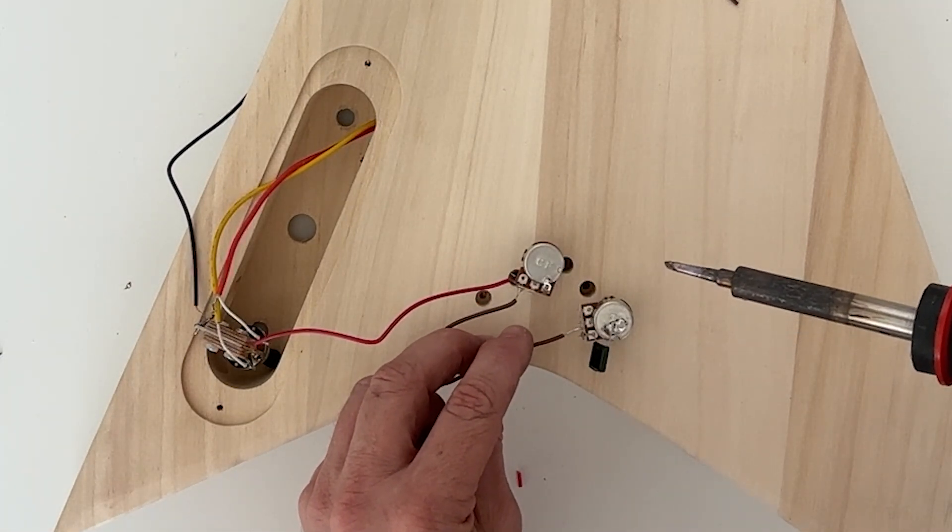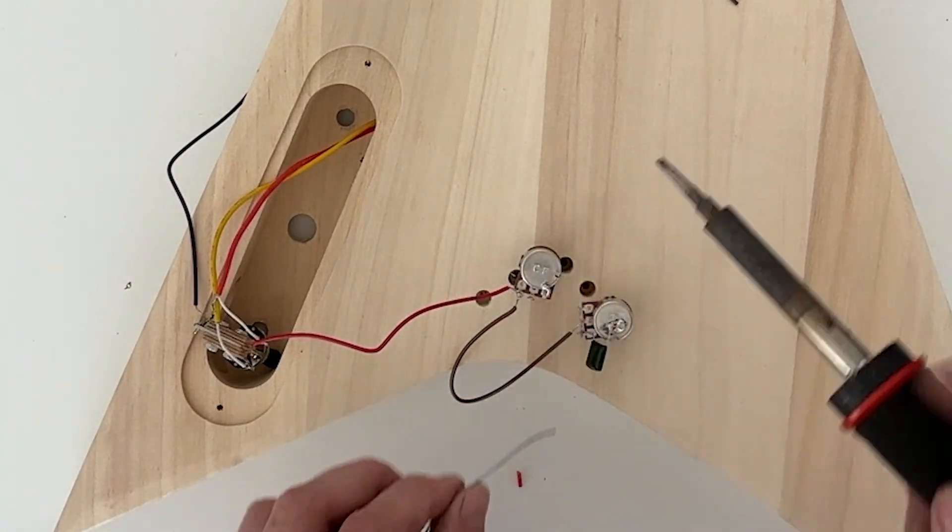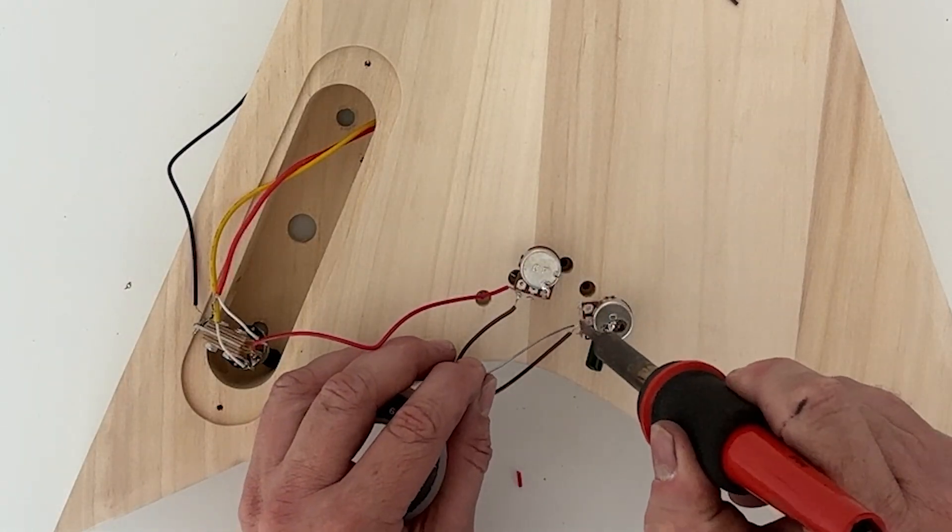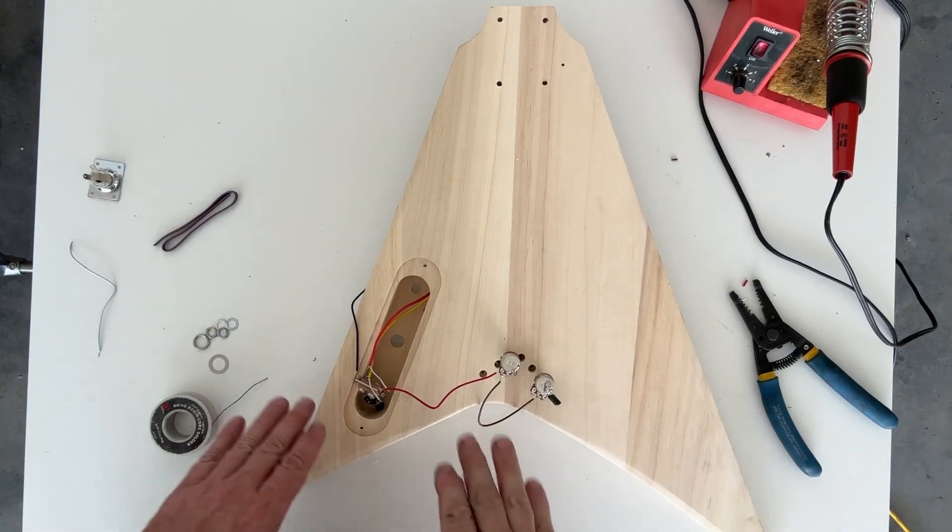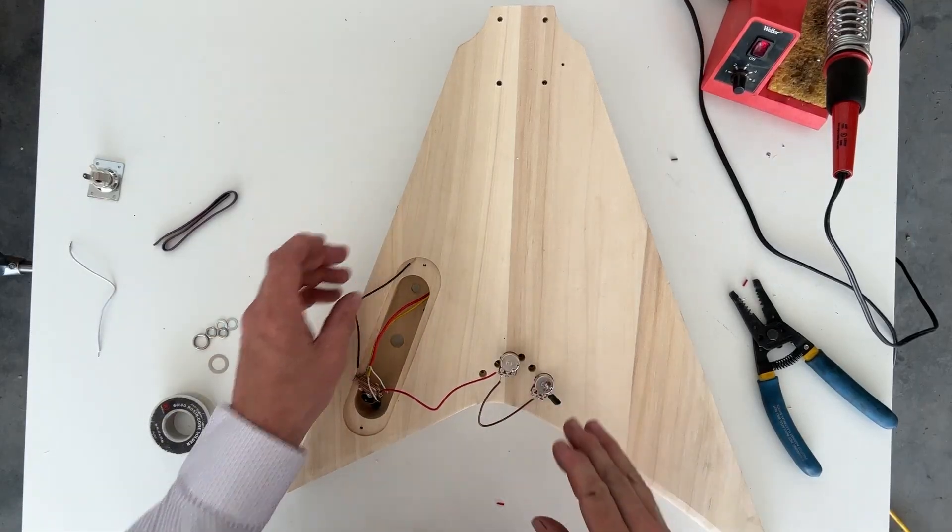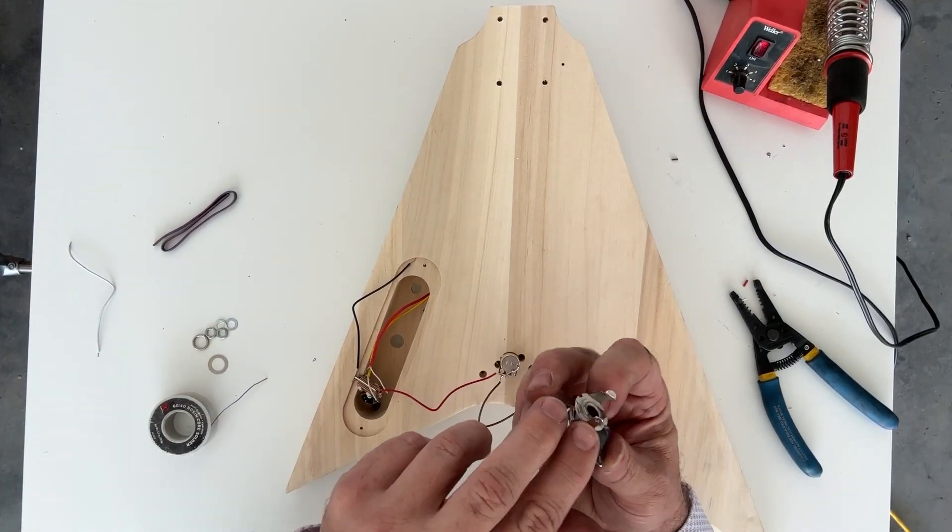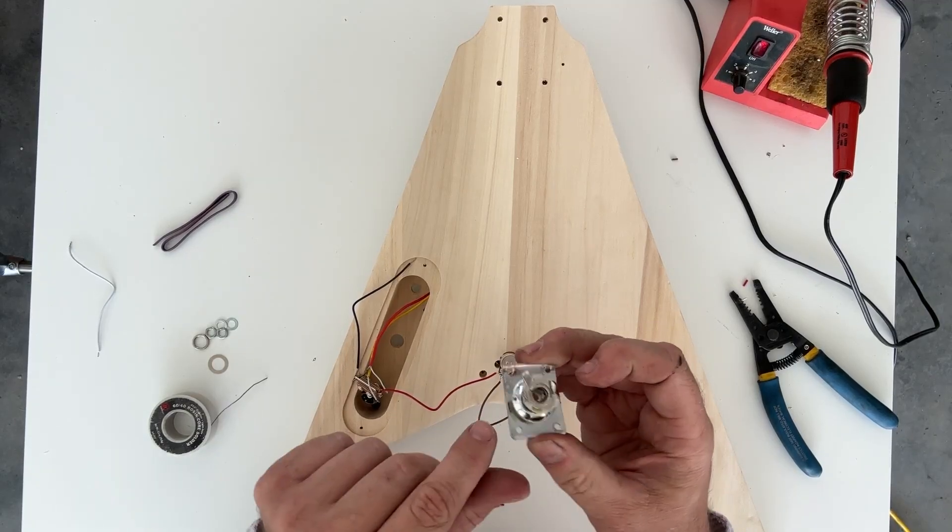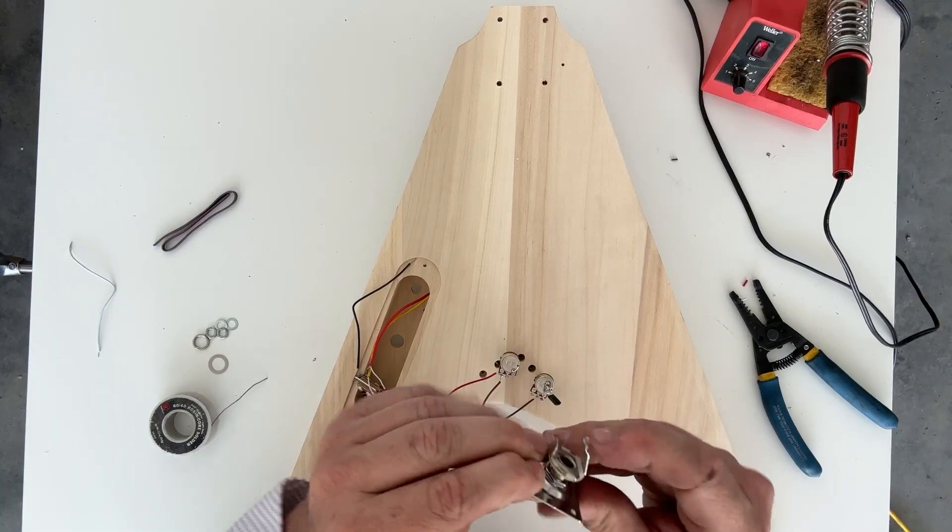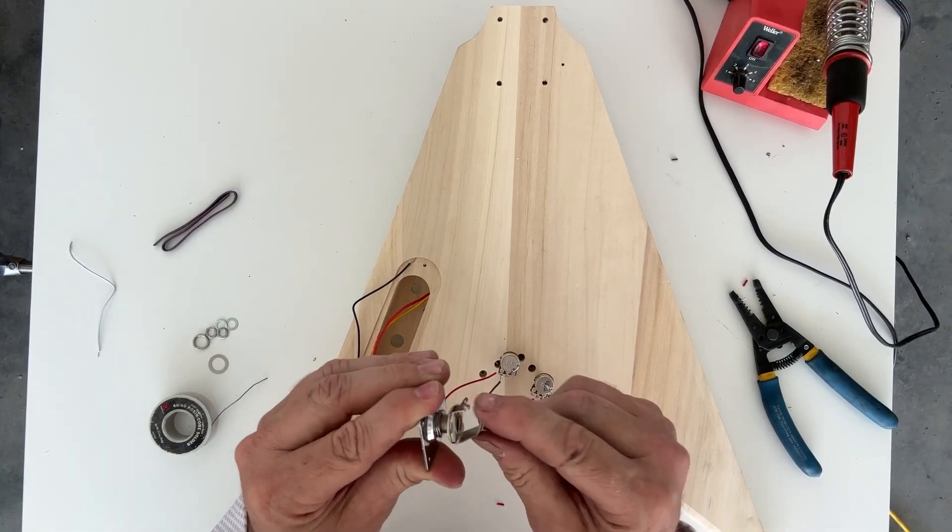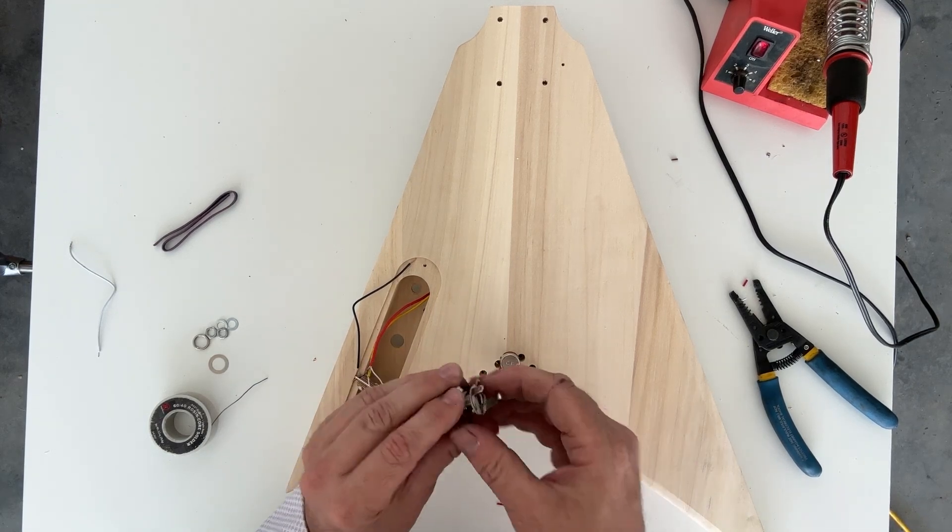This will go to the center lug, and this will go to the center lug on the tone. Now that we have the pickups wired to the switch and the switch wired to the pots, we're going to work on the output jack. On the output jack there's two lugs. One piece of metal connects to this spring—this connects to the tip of your guitar cable, that's the hot. The other one connects to the sleeve—that's your ground. We're going to start by connecting the hot.